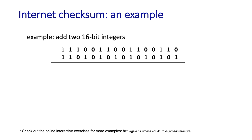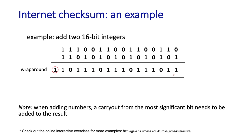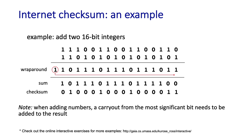Let's look at how the internet checksum is actually computed. Imagine computing the checksum over two 16-bit integers. We add them together in base-2 arithmetic, working from the right. After adding the 16 bits, if there's a carry bit on the left-hand side, that's a wraparound — we add it back into the 16-bit sum to get the final sum. Then to compute the checksum, we take the ones-complement, flipping zeros to ones and ones to zeros, giving us the internet checksum. The computation is relatively simple.